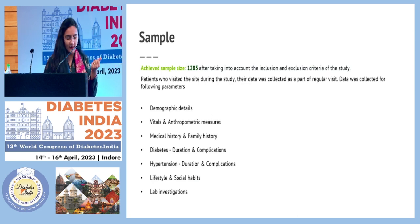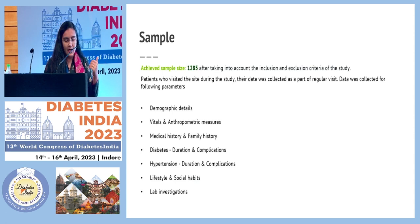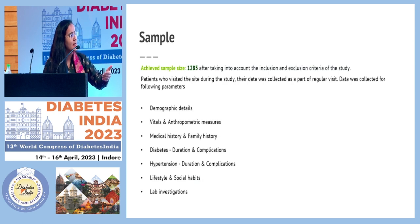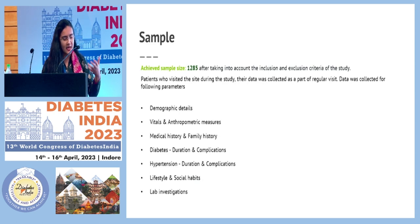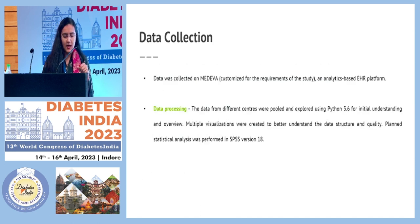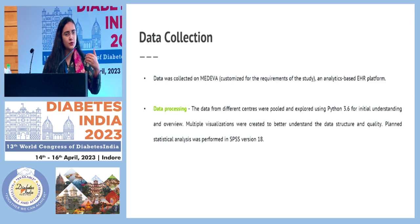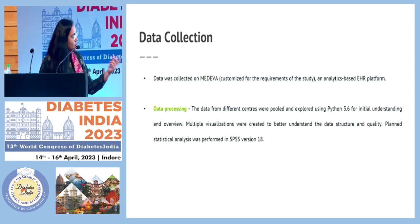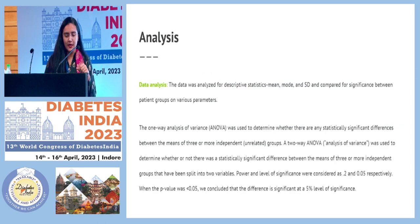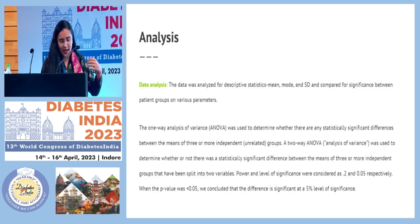The parameters collected include demographic details, vitals, medical history, family history, duration of diabetes and its complications, hypertension duration and complications — since the next subgroup analysis we want focuses on hypertension — as well as lifestyle, social habits, and lab investigations. Data was collected using an application, and data processing was handled by our scientific partners using SPSS version 8. For data analysis they used the ANOVA technique.